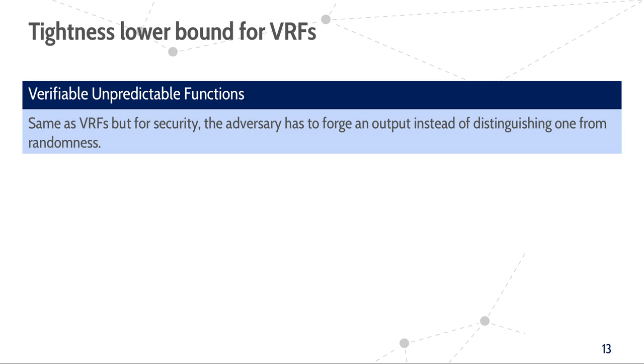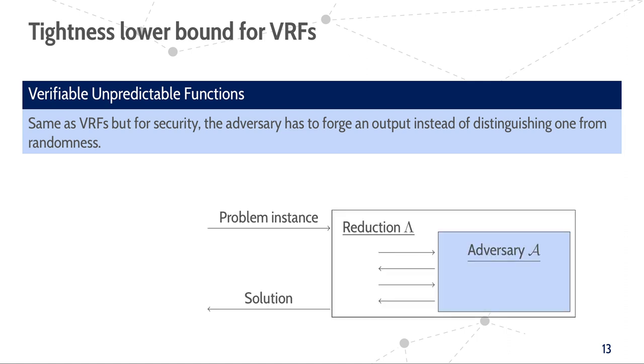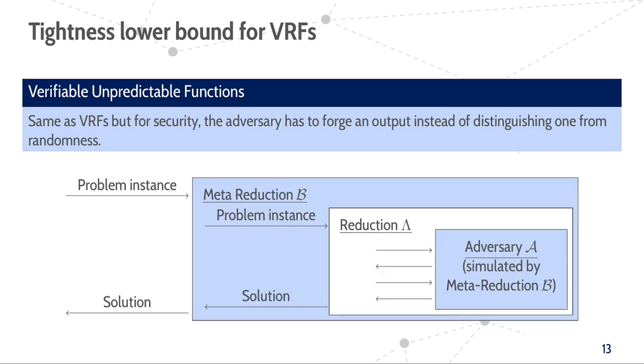If we now consider a security reduction, this usually looks as follows. We have a reduction that receives an instance of the hardness assumption, simulates the security experiment for the adversary, and in the end uses the adversary's solution to solve the instance of the hardness assumption. When we want to prove lower bounds on the tightness of a reduction, we usually do that with a meta-reduction technique by Coron. That is, we build a meta-reduction around the reduction that also solves the same hardness assumption. However, instead of using an adversary, the meta-reduction simulates an adversary for the reduction. Therefore, in this proof, it is actually the reduction that solves the instance of the hardness assumption, not some adversary.